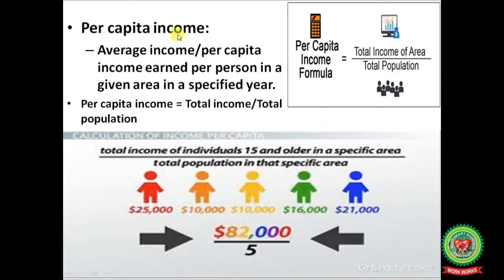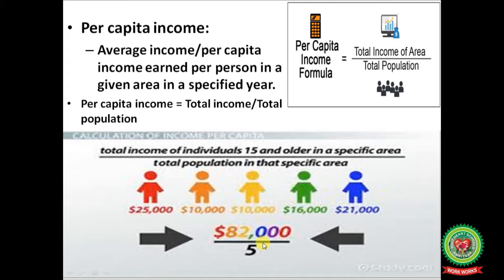Per capita income, also known as average income, is the income earned per person in a particular area in a specified time period. Per capita income equals total income in a particular region divided by the total population. Suppose in a region there are 5 persons earning different amounts — by adding all their incomes and dividing by 5, you will get the per capita income.